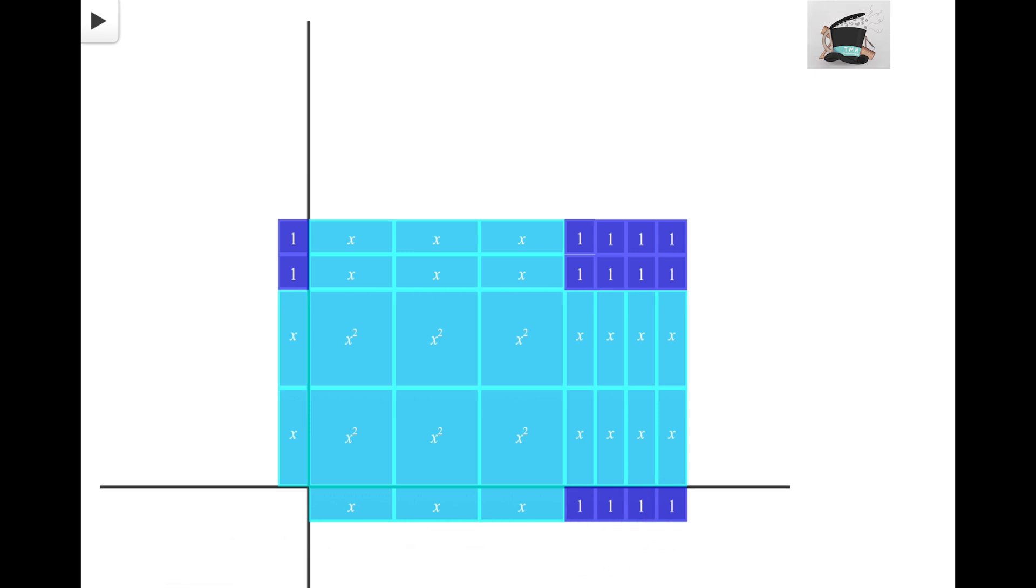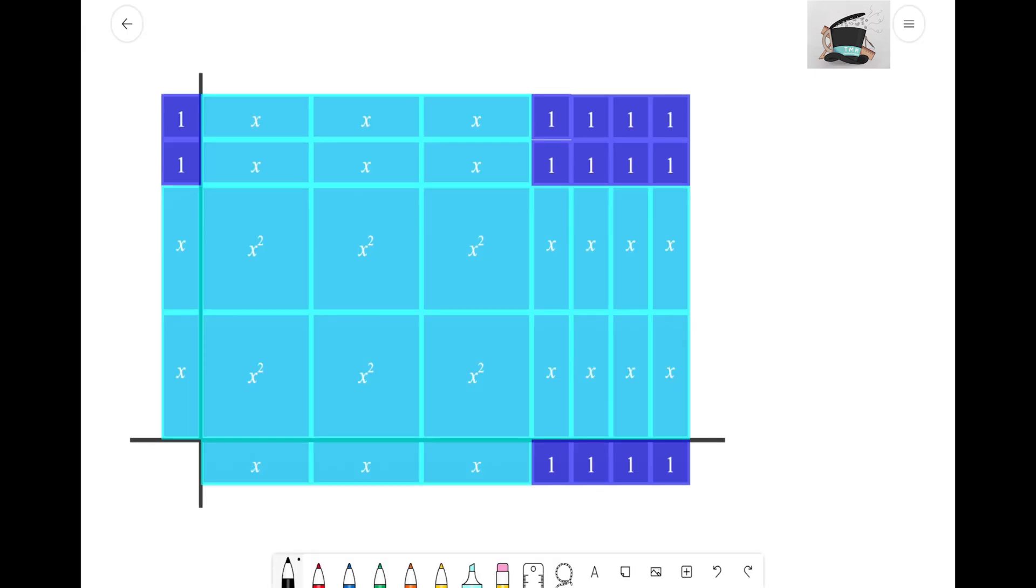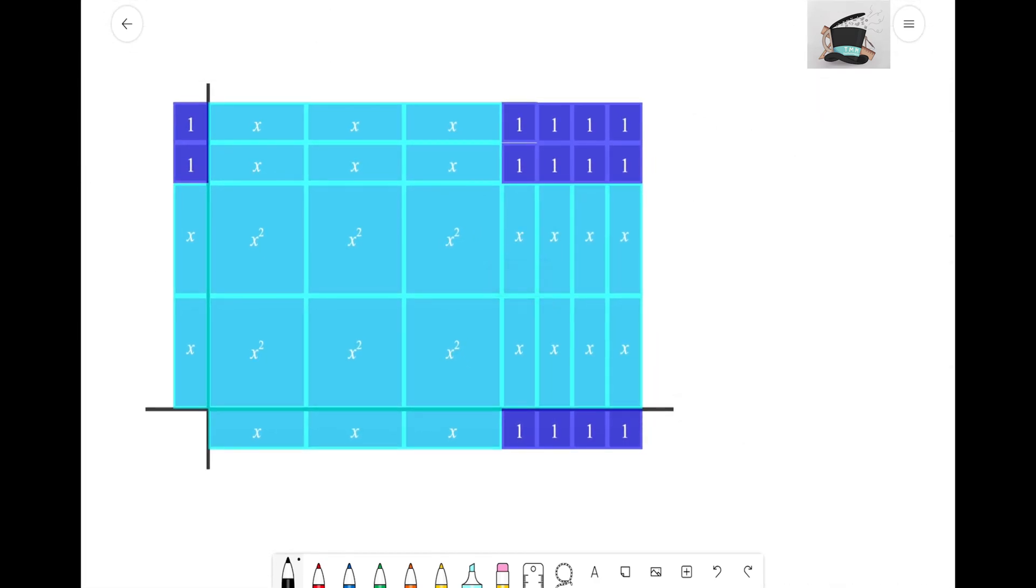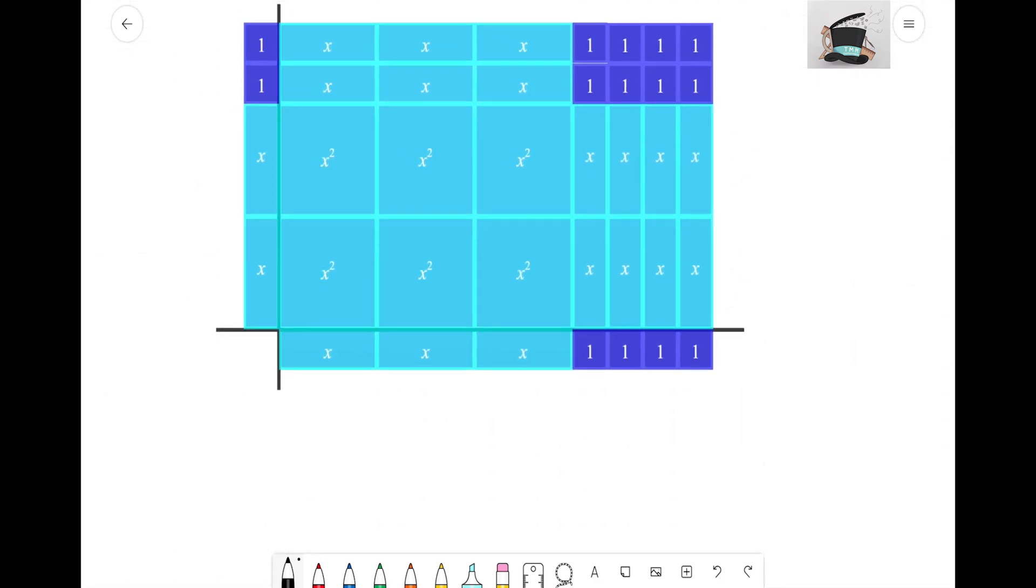Again, remembering that algebra tiles are just a way for us to examine this rectangle to figure out the sum to the product. Now let's go ahead and figure out and write this out so we can see it. Now that we have this set up, what we want to do is write out what we see as the sum and as the product. Remember, for sum all we have to do is just count up.